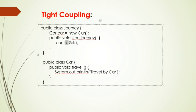There are two methods: start journey and travel method. In the Car class, I am using the travel method. In this code, Journey class is dependent on Car class to provide service to the end user.